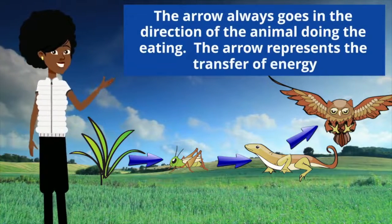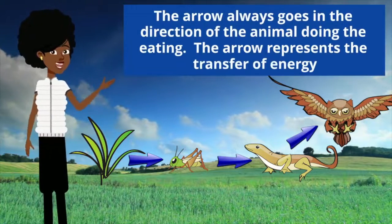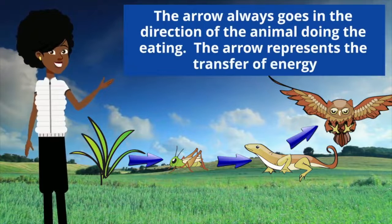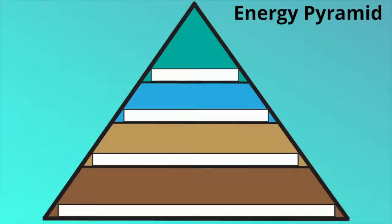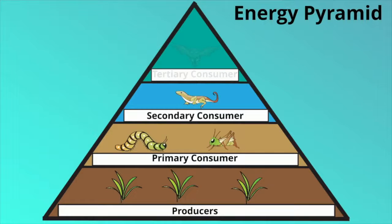Notice that the arrow always goes in the direction of the animal doing the eating. The arrow represents the transfer of energy. We can see that transfer in the energy pyramid, with producers at the bottom, followed by primary consumers, secondary consumers, and tertiary consumers.